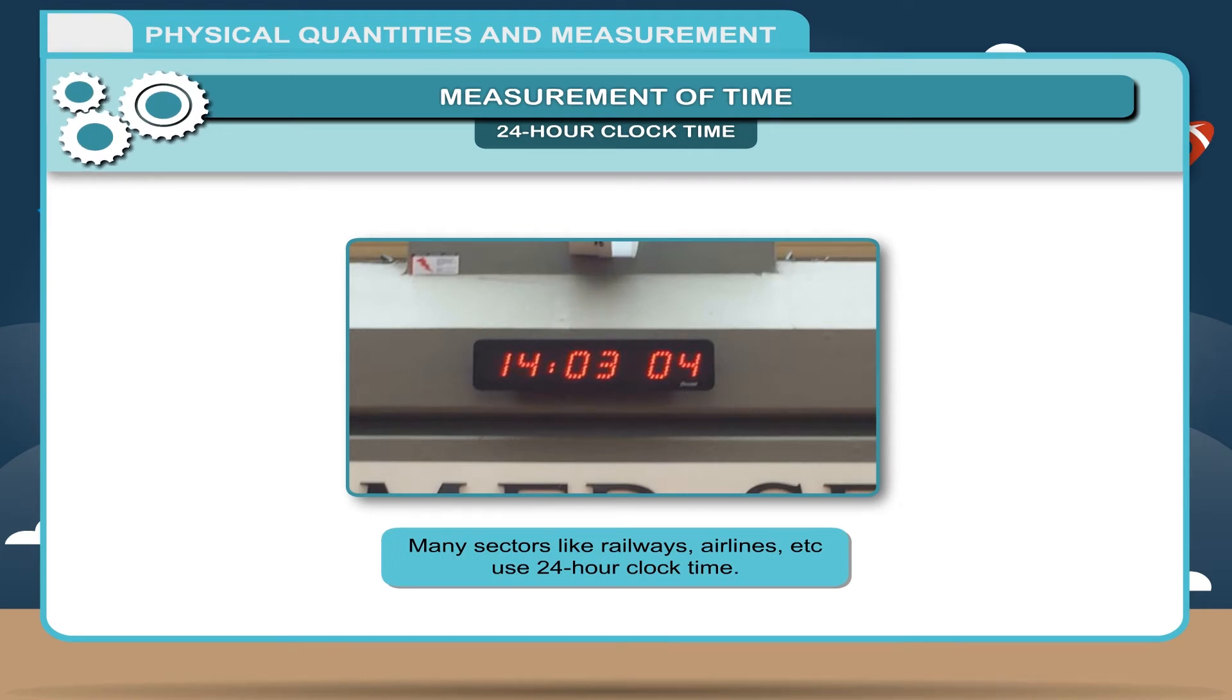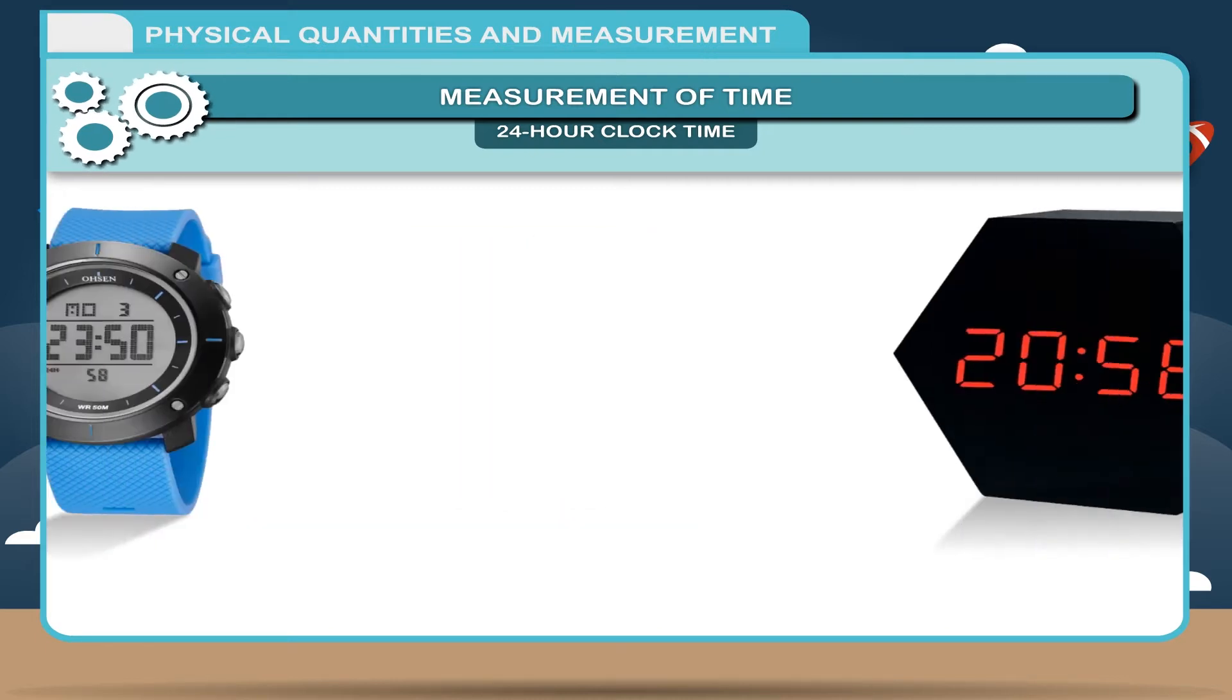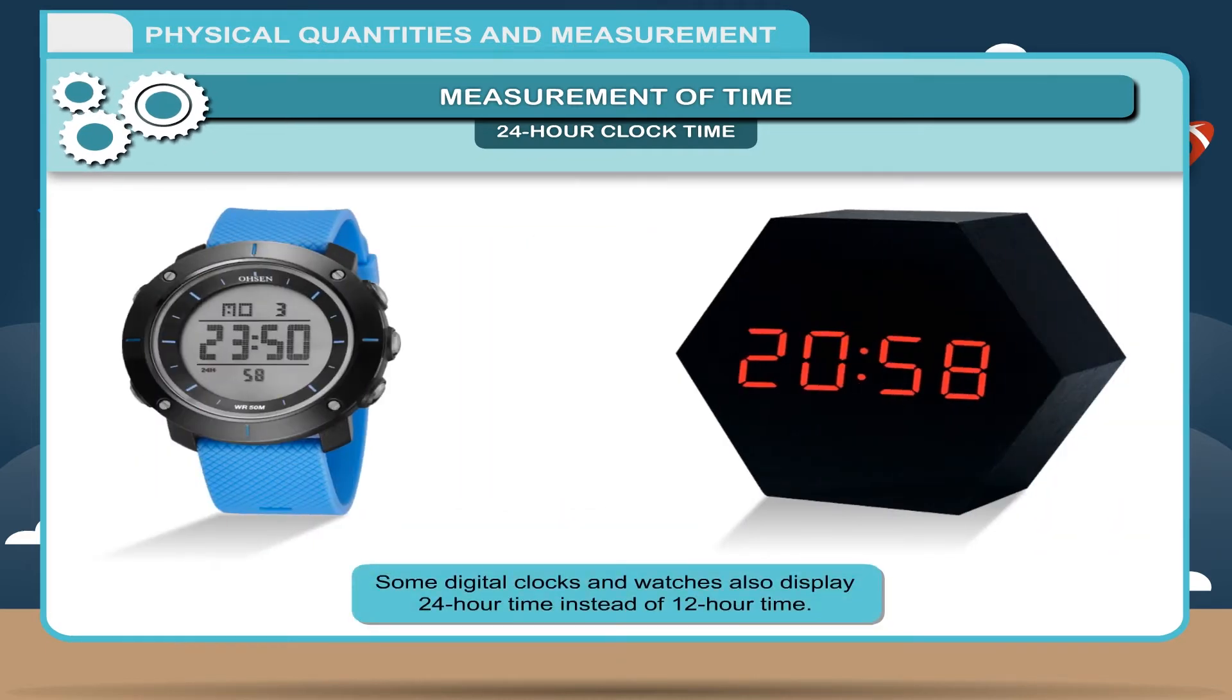Many sectors like railways, airlines, etc. use 24 hour clock. Some digital clocks and watches also display 24 hour time instead of 12 hour time. In this clock, time is not repeated on the same day and no AM or PM is used.